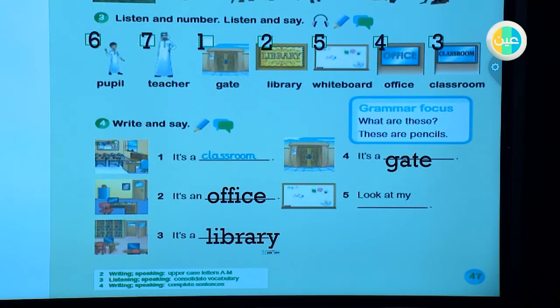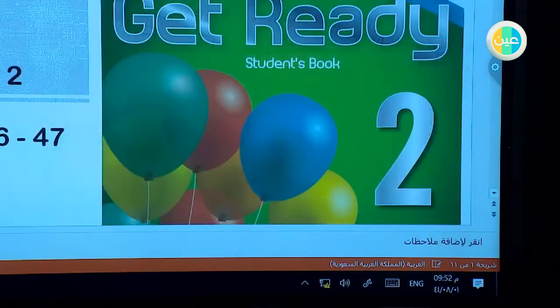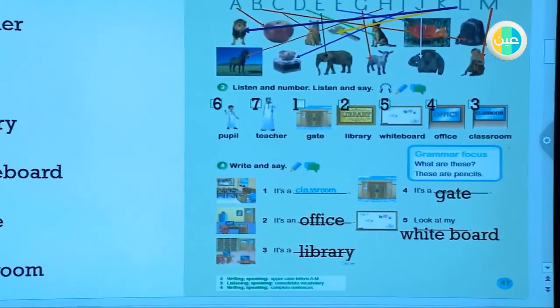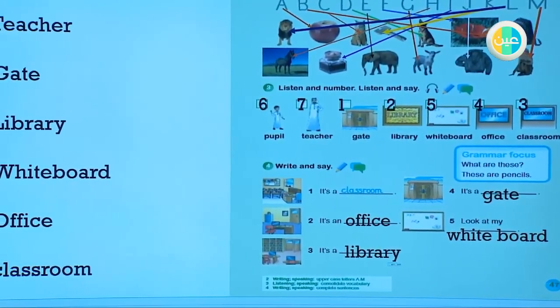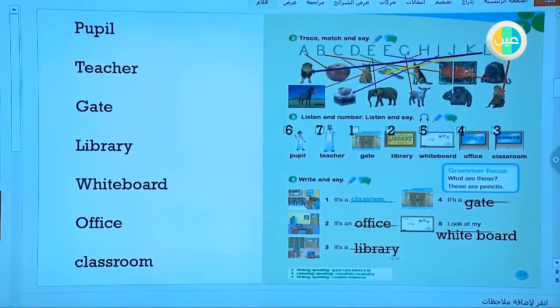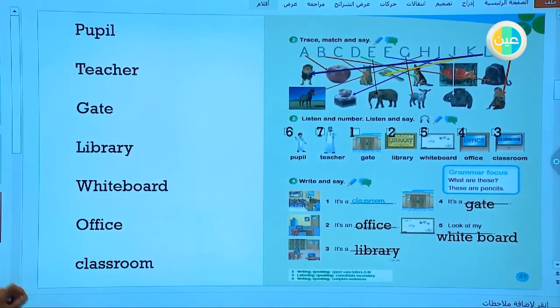Today, my dear student, here we have new words. What did we study here in this lesson? We study many words: people, teacher, gate, and library. What is library? A place you can read. Whiteboard, what is it? Office and classroom. If I ask you, how many classrooms in your school, you give me what? You give me numbers. How many? Excellent. For example, there are 10 classrooms in my school.